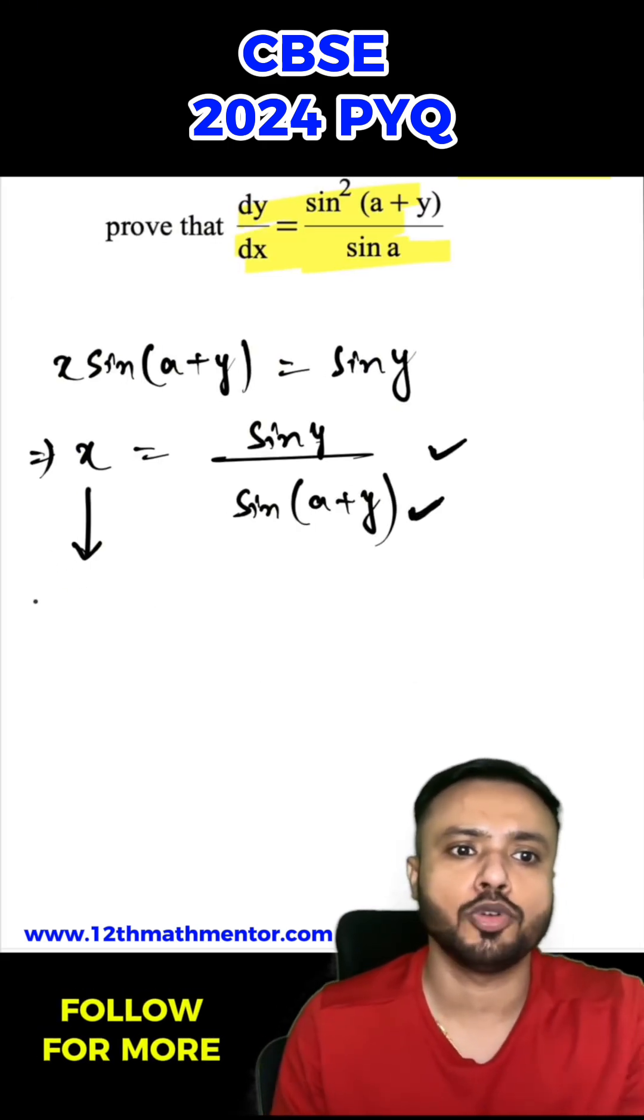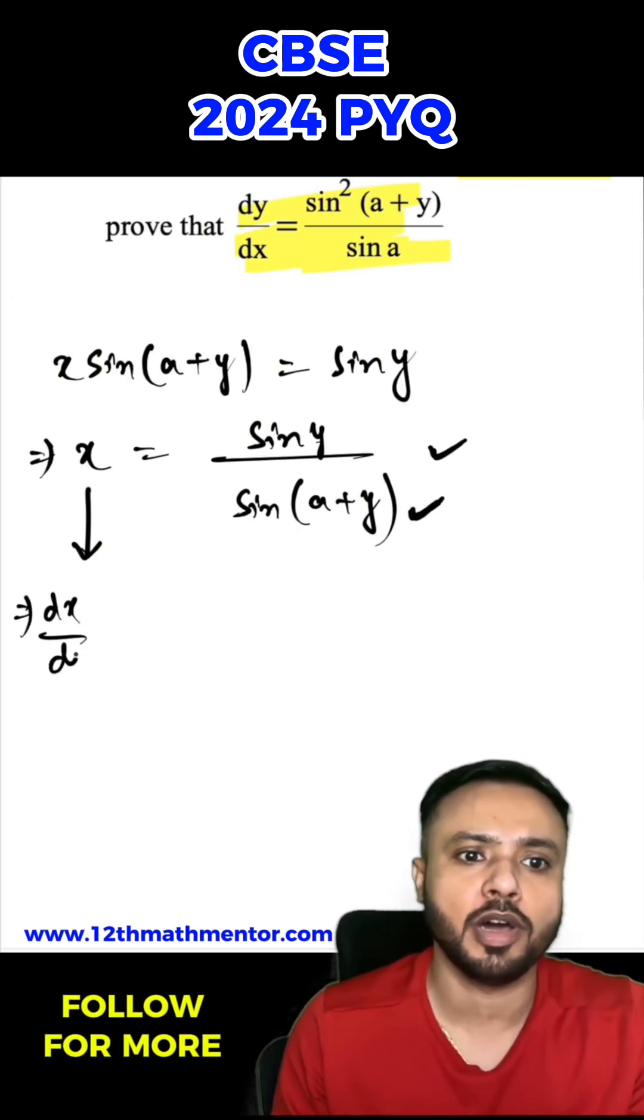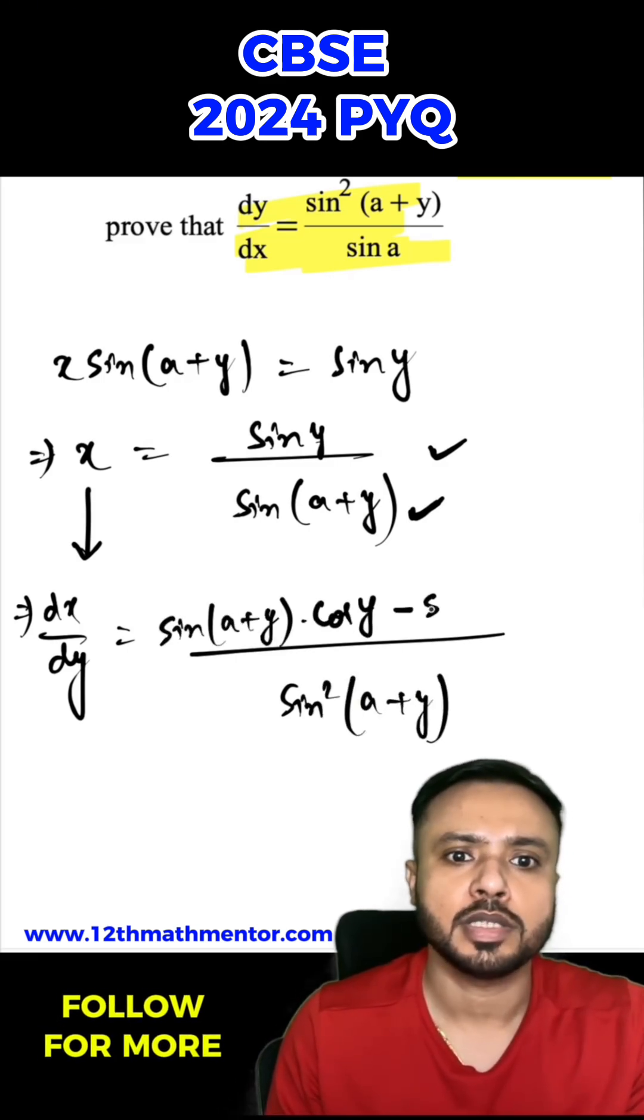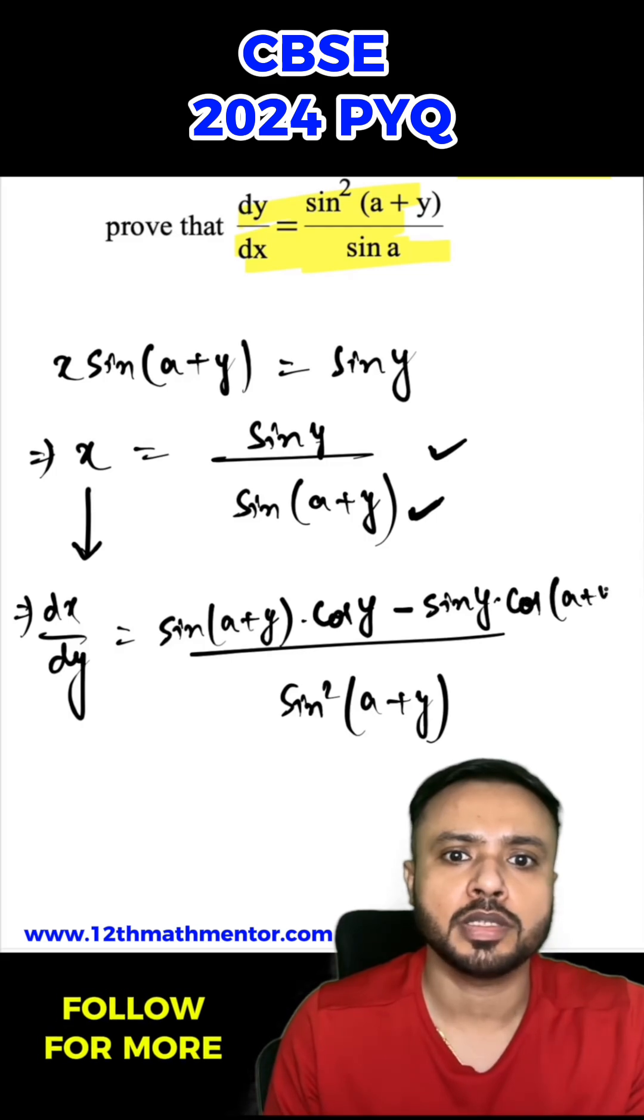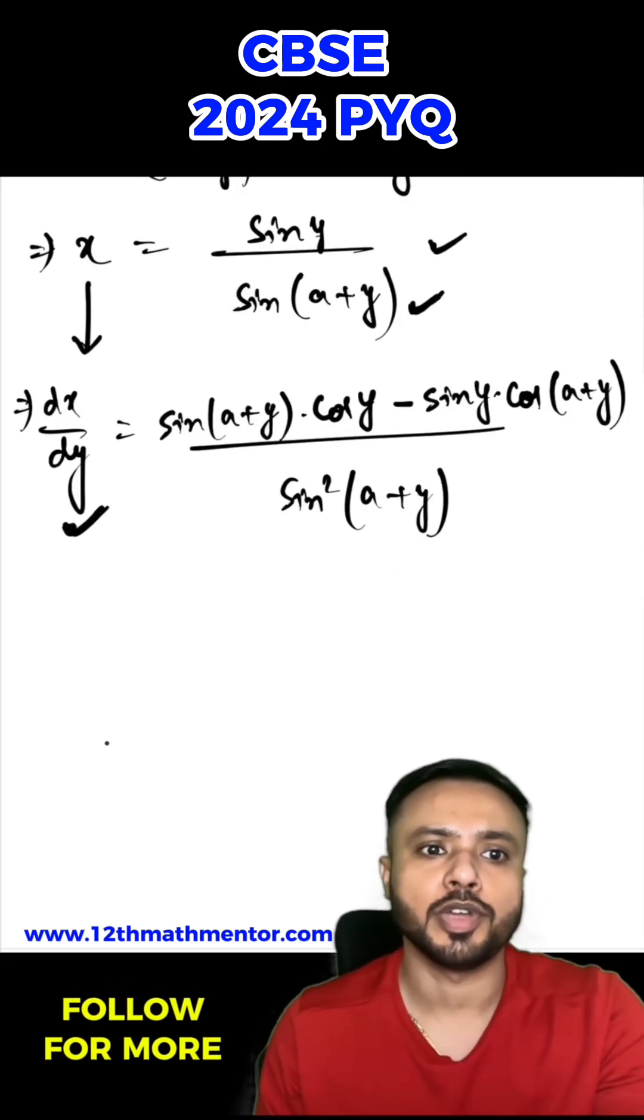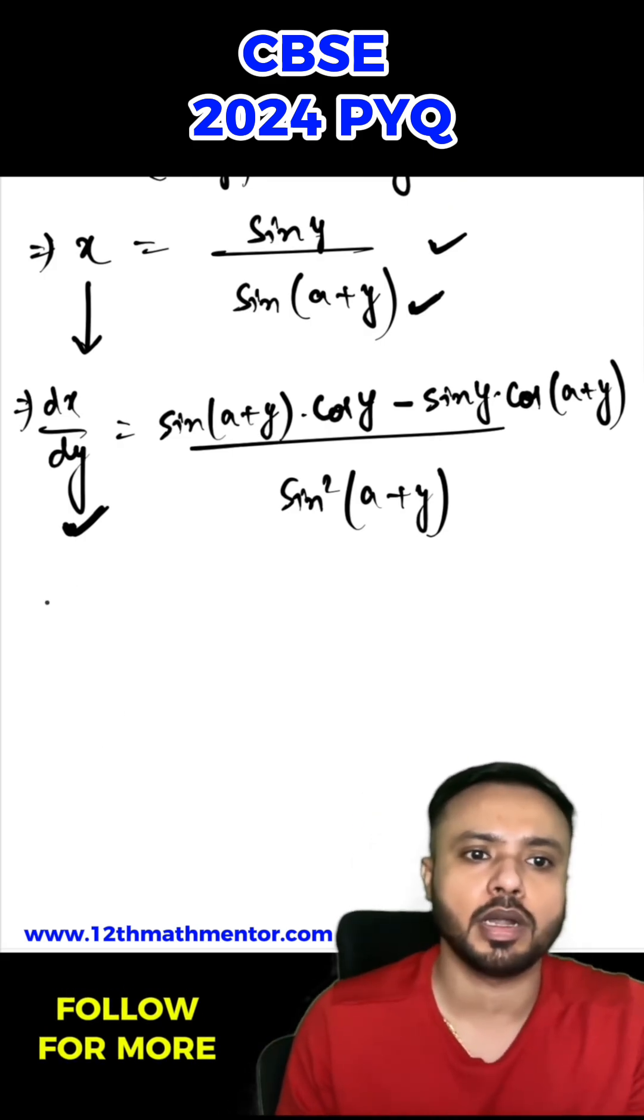I am going to differentiate both sides with respect to y. So dx/dy = [sin(a+y)·cos y - sin y·cos(a+y)] / sin²(a+y). I have differentiated with respect to y on both sides. When I get dx/dy, I will reverse it to get our answer.